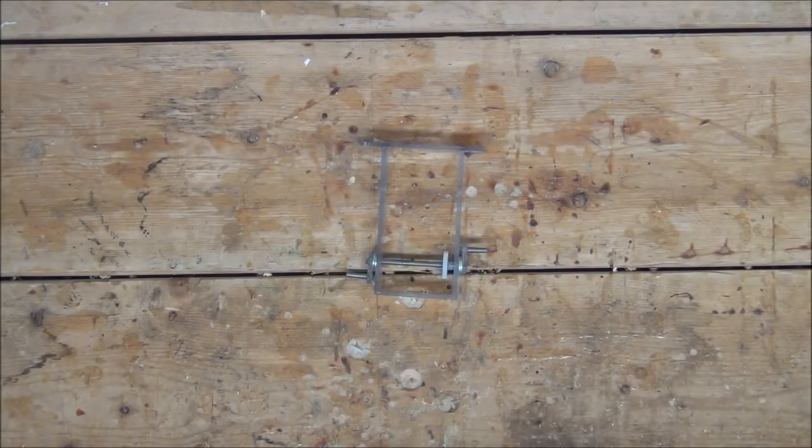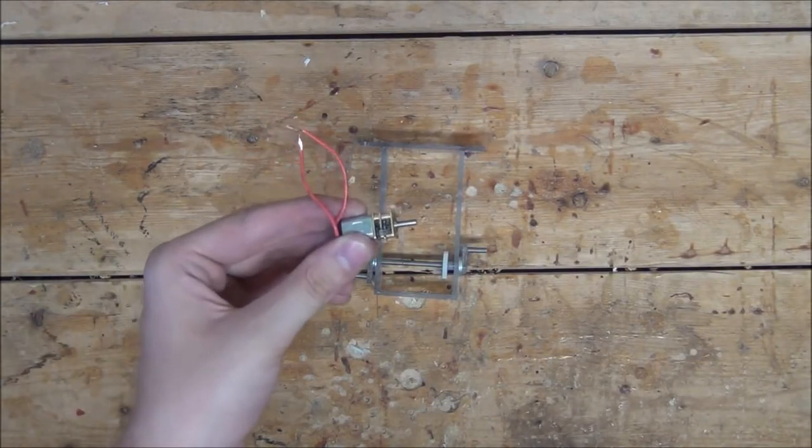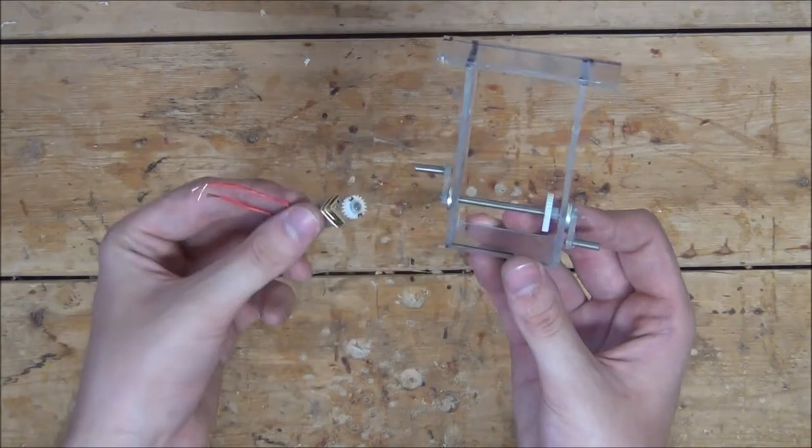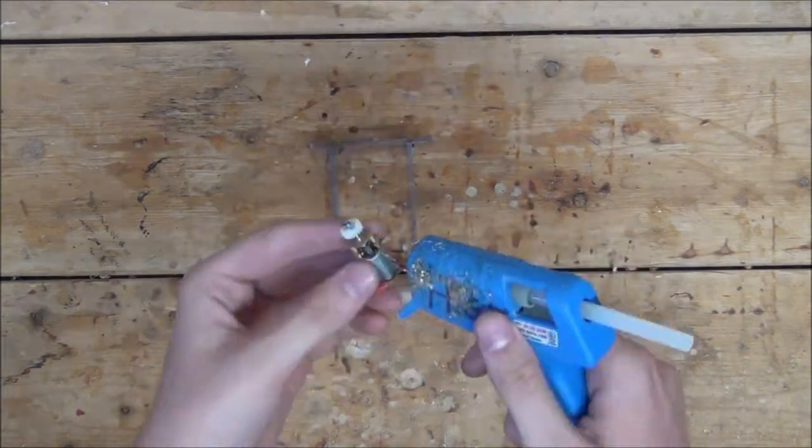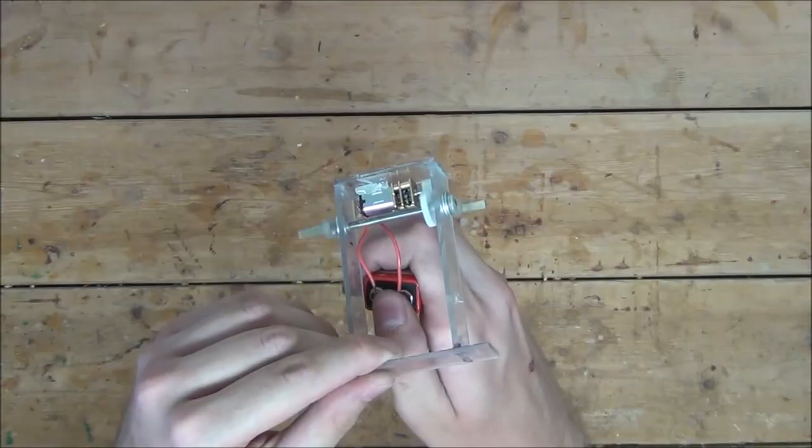Now, to finish the gearbox, I'm going to take this 600 RPM motor and glue on an 18-tooth gear onto it, then hot glue the motor beneath the pin in such a way that the two gears make contact. That works pretty well.